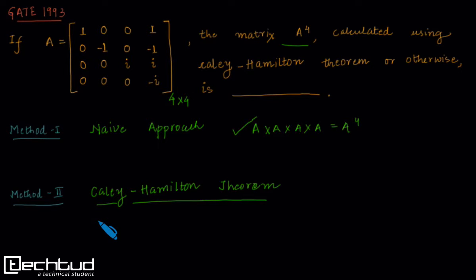And how do we find the characteristic equation? The characteristic equation for this matrix A is given by this equation. Now let's look at how we are going to find A^4 using this equation.